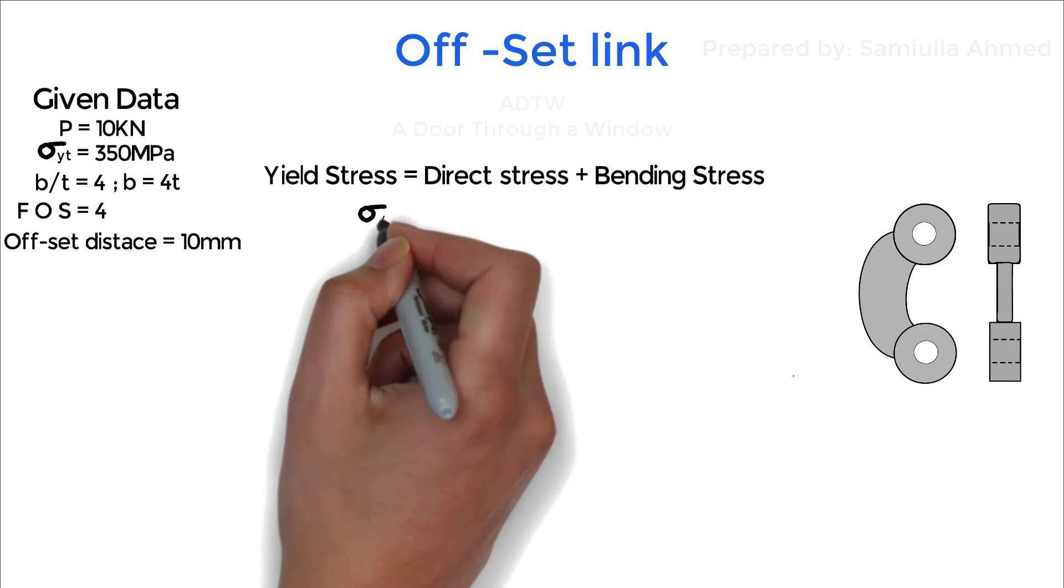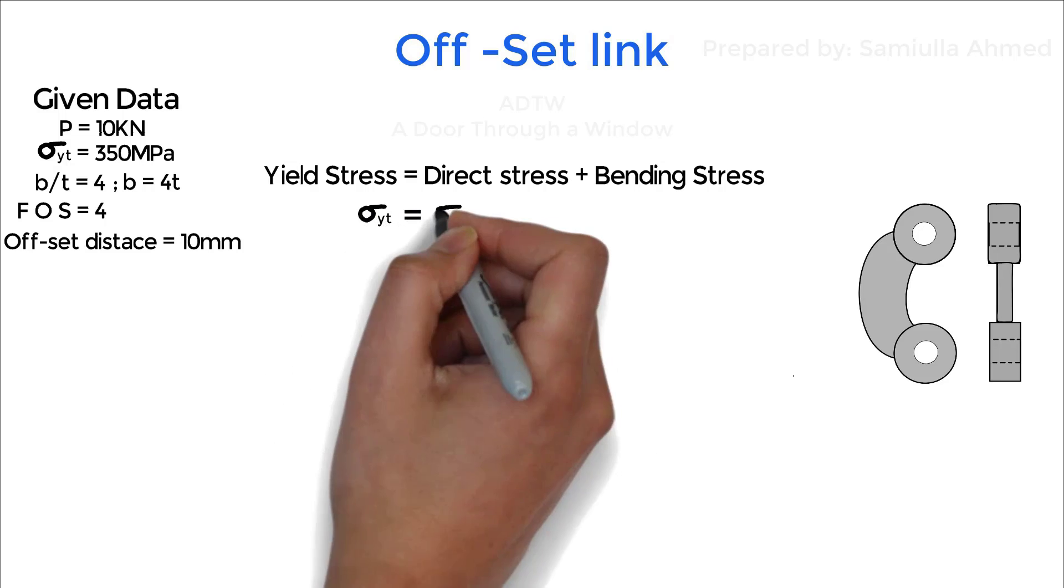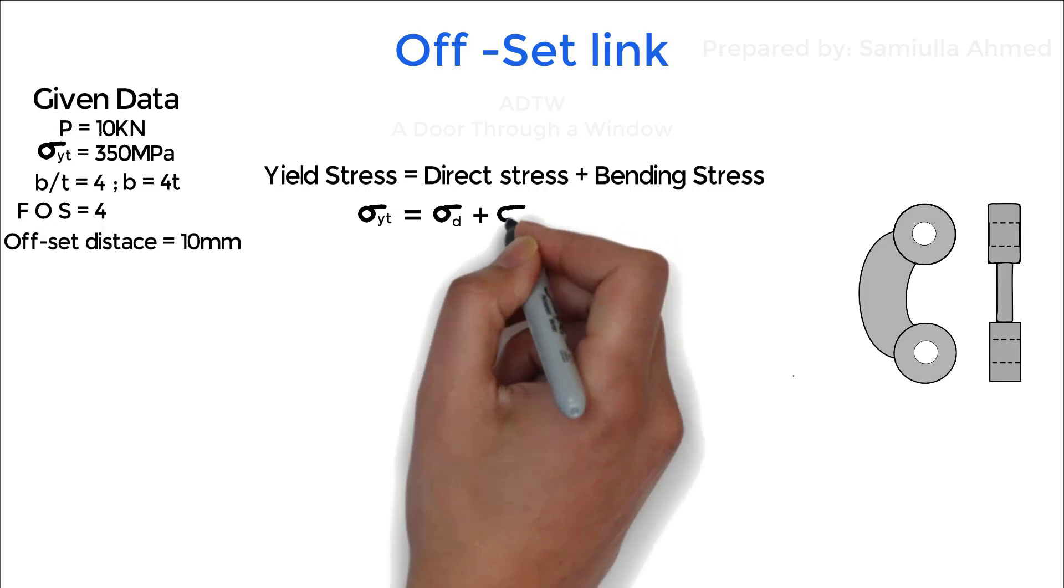Therefore the yield stress should be equal to sum of these two stresses. Yield stress is denoted by sigma yt, direct stress is denoted by sigma d, and bending stress is denoted by sigma b.